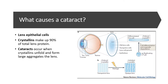What causes a cataract? The lenses in our eyes are made up of crystallins, which make up about 90% of the total lens proteins. These crystallins aren't any natural crystalline structure — they are normally soluble. When these crystallins are denatured or disturbed, they unfold and cause large aggregates in the lenses, which eventually leads to cataracts.